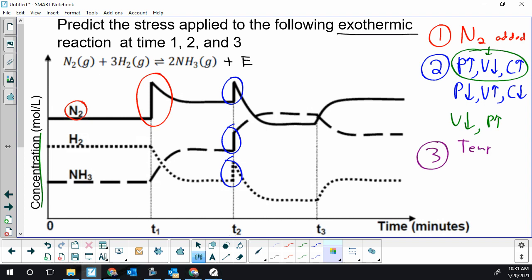First I'll look at my nitrogen gas and following that along we see that we have an increase after the stress was added. If we look at our hydrogen gas, that is also increasing at time equals three.